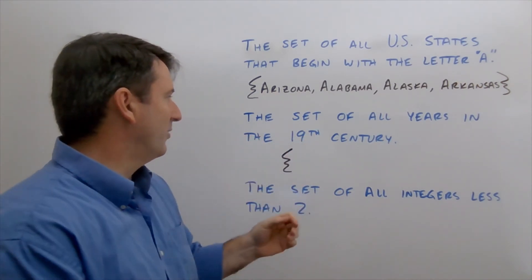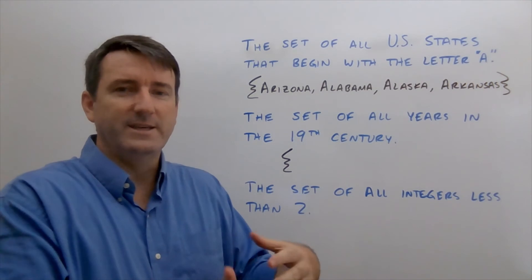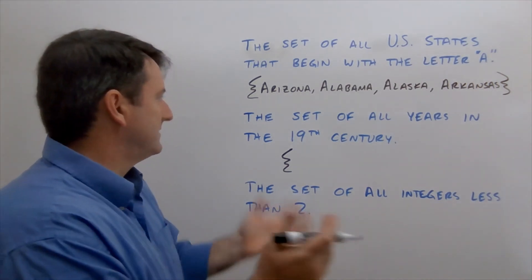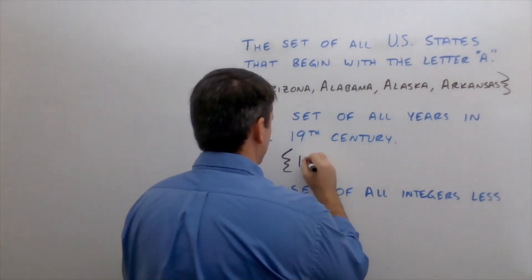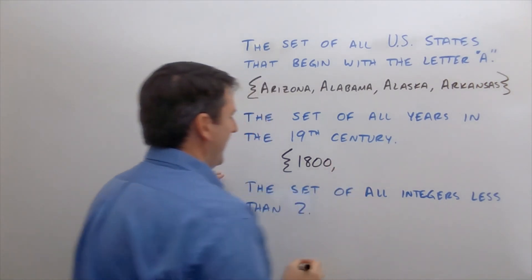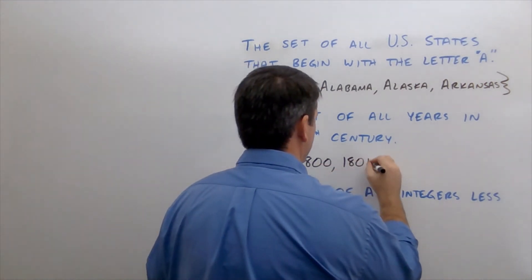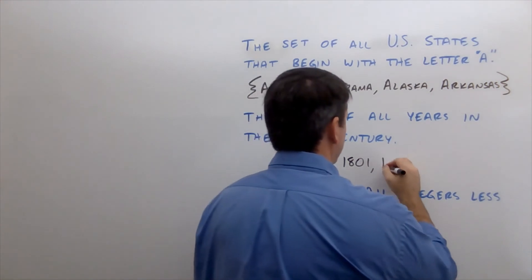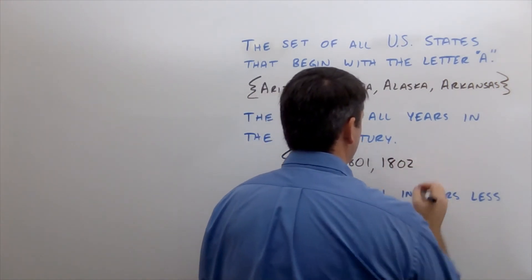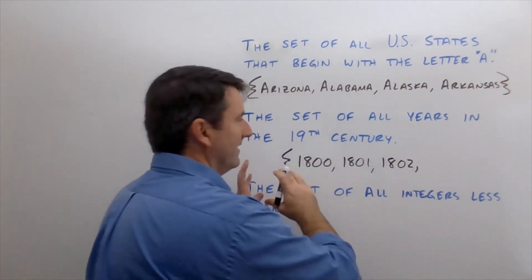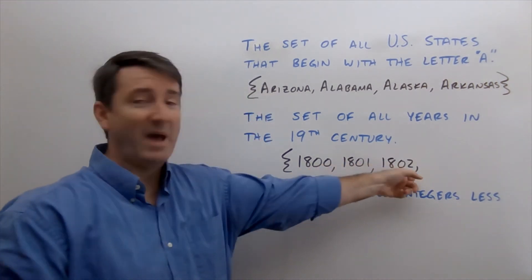Which, depending on your viewpoint, could either be 1800 or 1801. Let's go with 1800. And then the next year would be 1801, and then 1802. And then instead of writing all of these out, we can see the pattern here.